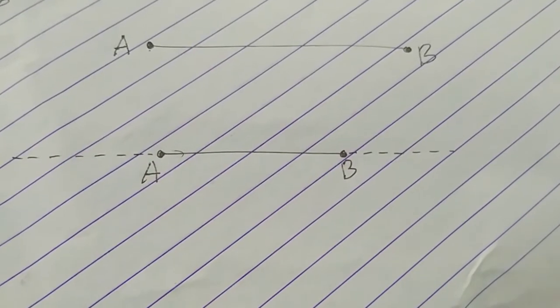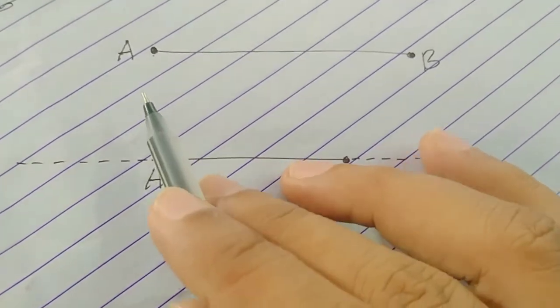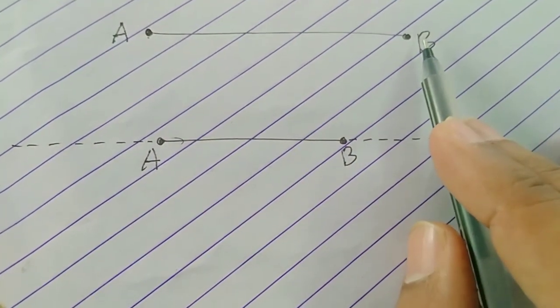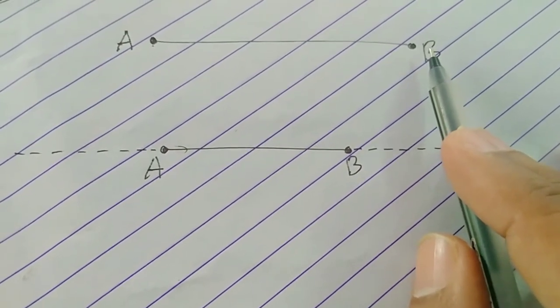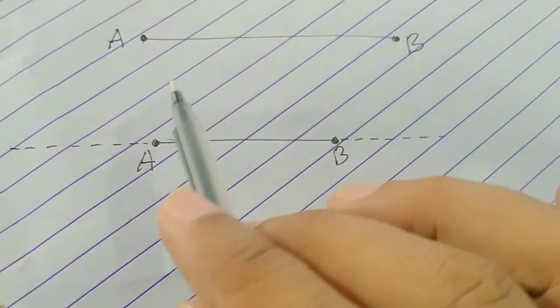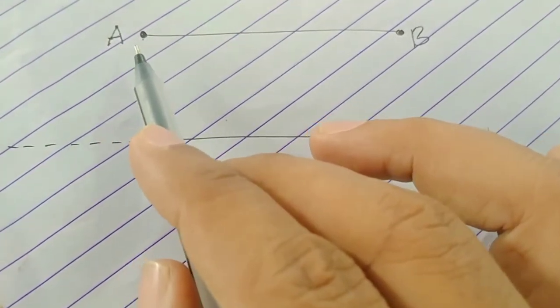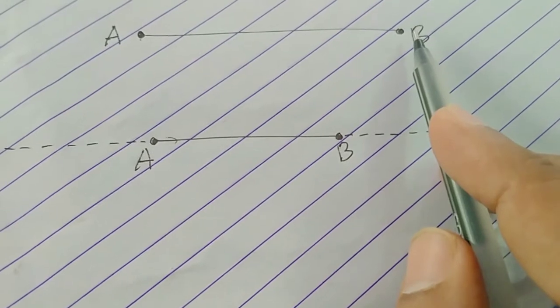Now, our next topic in basic concepts in geometry is line segments and lines. Take two points A and B on the sheet of paper and join them using a ruler. Here, we get straight line AB.